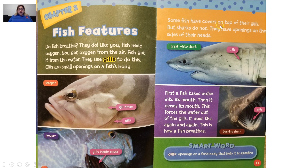Some fish have covers on top of their gills, but sharks do not. They have openings on the sides of their heads. This is a photograph of a great white shark, and these are the gills that they have. First, the fish takes water into its mouth, then it closes its mouth. This forces the water out of the gills. It does this again and again — this is how a fish breathes. Here is another label pointing to the gills of a basking shark, showing the inside of the gills.